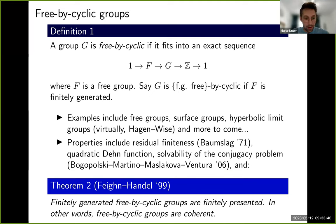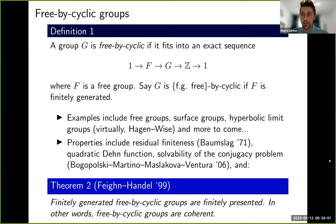'Finitely generated' here means that G is finitely generated, not the free part. When the free group in a free bicyclic group is finitely generated, there are generally many tools that can be used to study them — namely, if you understand the automorphism group of a free group and the dynamics of an automorphism of a free group, you can understand free bicyclic groups very well. But generally these results carry over also to non-finitely generated free bicyclic groups.